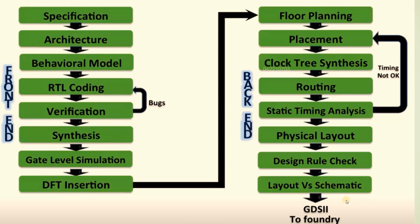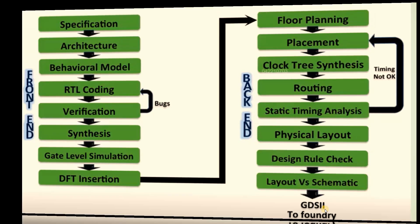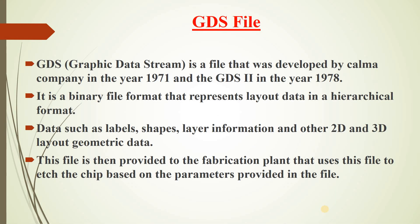The final step is GDS file generation. GDS stands for Graphic Data Stream. It is a binary file format that represents layout data in a hierarchical format and is not human-readable. Data such as labels, shapes, layer information, and 2D and 3D layout geometric data are stored in this file. Finally, this GDS file is provided to the fabrication plant — the Foundry — which uses this file to etch the chip based on the parameters specified in the GDS file.